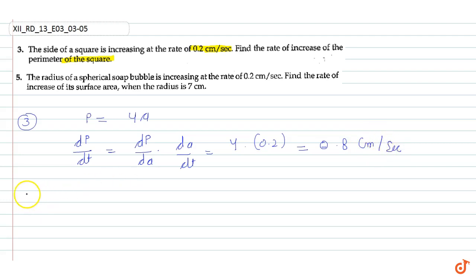That's our third question. Now the fifth question: the radius of a spherical soap bubble is increasing at 0.2 centimeters per second. So we have to find the rate of increase of its surface area when the radius is 7 centimeters.